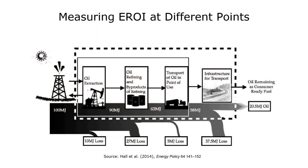EROI can be measured at different points in the energy conversion chain. The example I just gave describes EROI at the point of extraction, because it looks at the crude oil coming out of the well and the energy to build that well. You could also look at the energy in a liter of refined petrol and the energy it takes to build the oil well, produce the crude oil, refine it into petrol, and transport it to the petrol station — that would describe the EROI at the point of use. EROI at the point of use is always lower than at the point of extraction because energy is lost in the conversion process and it takes extra energy to get the fuel to the point of use.